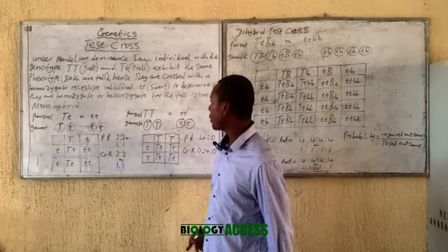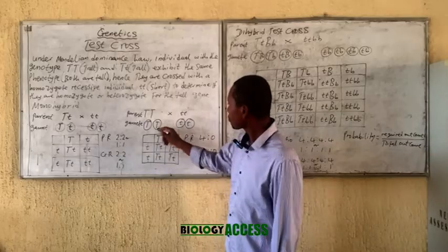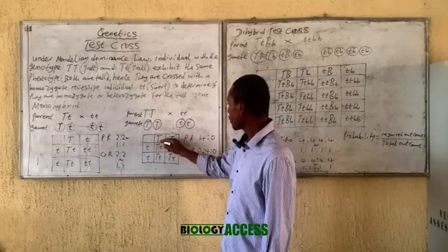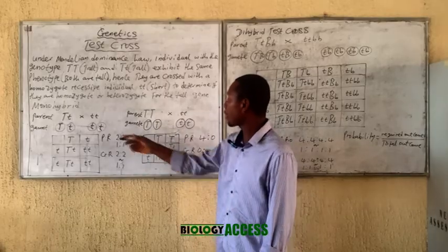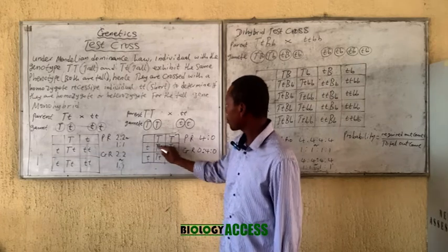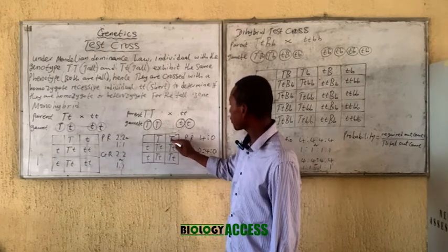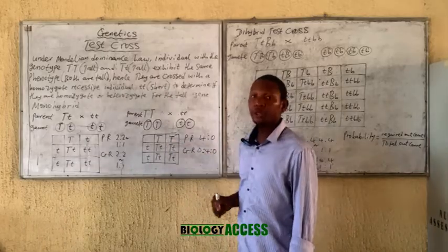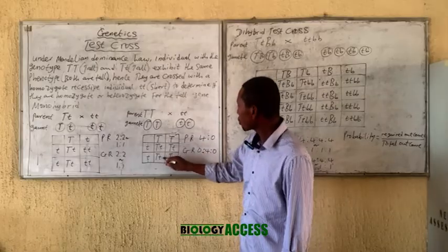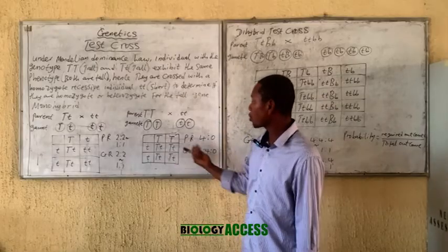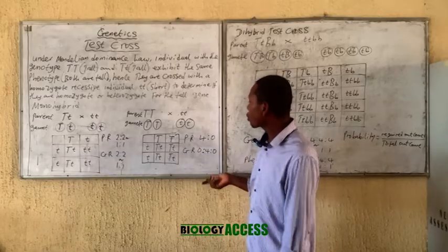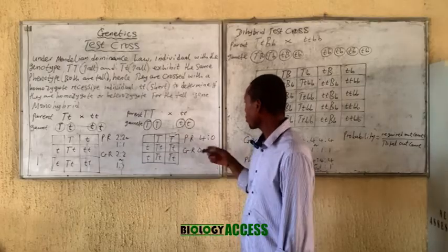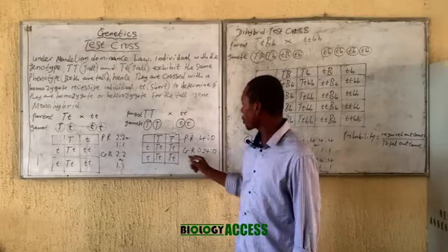Now we also cross the other case — where this is the gamete for the homozygote tall plant. Both gametes are placed into the Punnett square. All four offspring here are tall; none is short. For the genotype, all four are the same homozygote dominant, so zero are heterozygote.